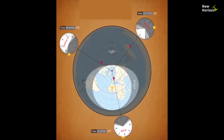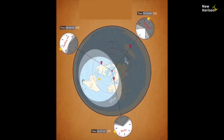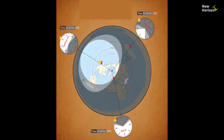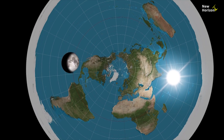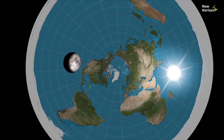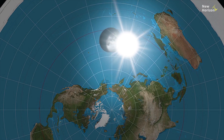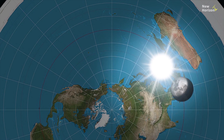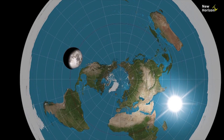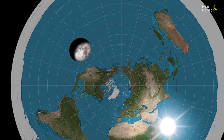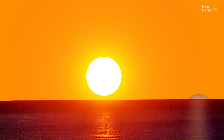The flat earth model is based on assumptions. They have no common narrative or standard data. They can't explain the nature of the Sun and moon and their movement relative to each other. Some of them believe that the moon emits light — if it was true, there would be no moon phases at all.